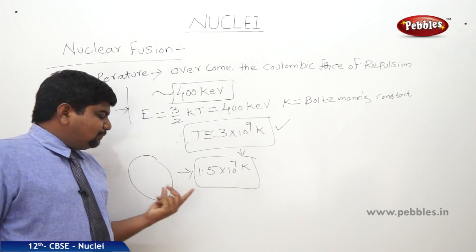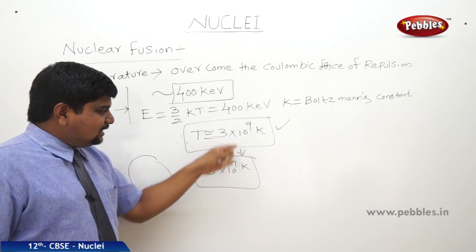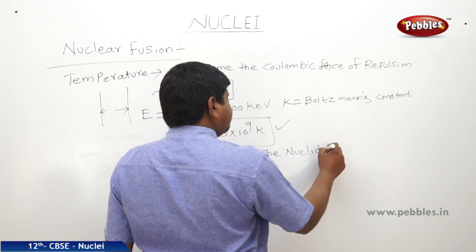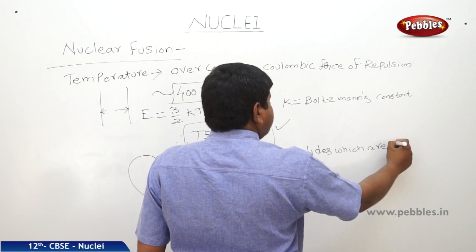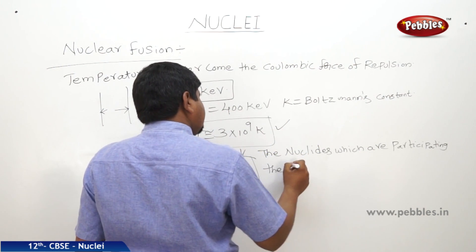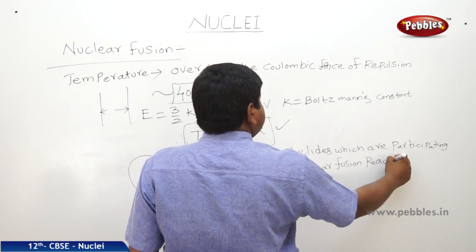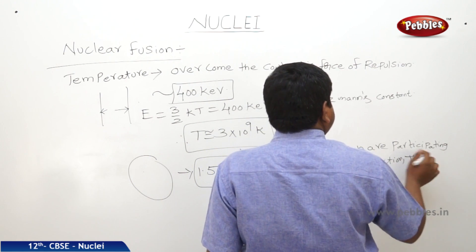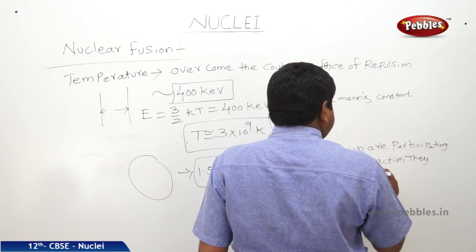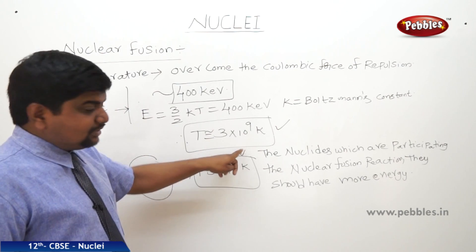That's why the particles which are participating in the fusion reaction inside the sun, they have more energy than the original particles. Otherwise this theorem is going to be invalid. So the nucleides which are participating in the nuclear fusion reaction should have more energy than the average values of the energy. Otherwise this much temperature won't be possible.